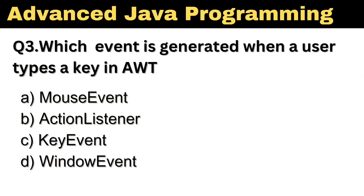Question number 3. Which event is generated when a user types a key in AWT? The right answer is option C: Key Event.